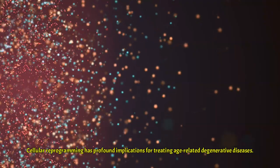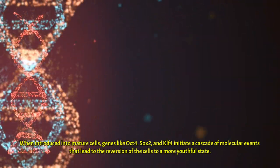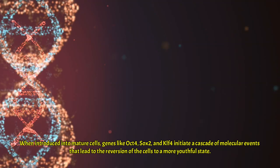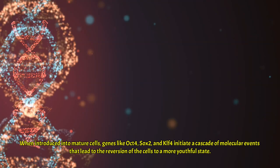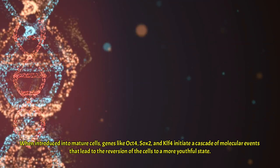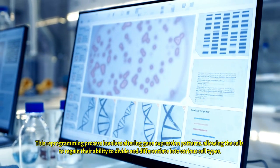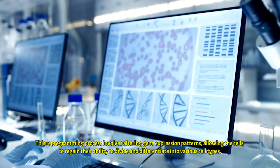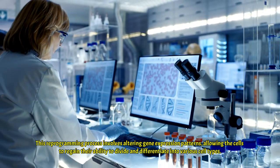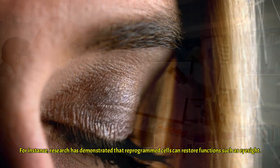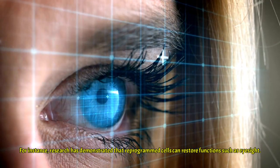Cellular reprogramming has profound implications for treating age-related degenerative diseases. When introduced into mature cells, genes like OCT4, SOX2, and KLF4 initiate a cascade of molecular events that lead to the reversion of the cells to a more youthful state. This reprogramming process involves altering gene expression patterns, allowing the cells to regain their ability to divide and differentiate into various cell types. For instance, research has demonstrated that reprogrammed cells can restore functions such as eyesight.